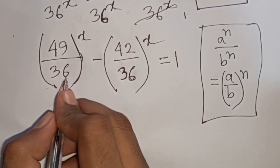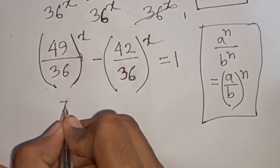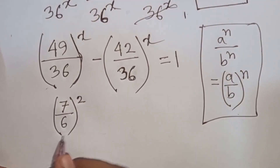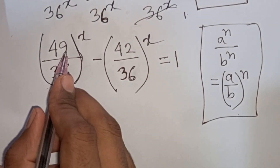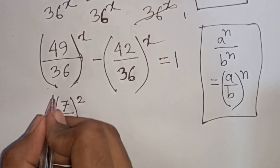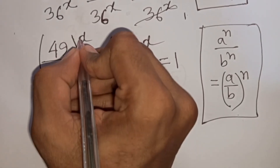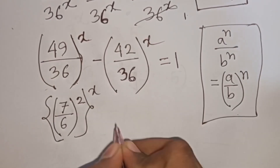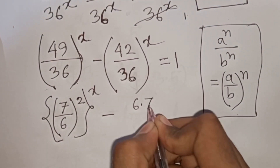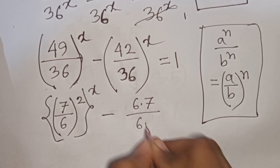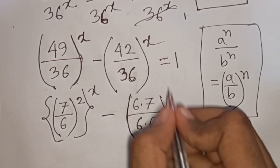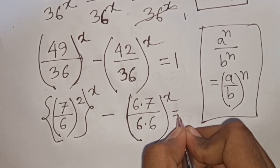Now, 49 over 36 can be written as (7/6) squared, since 7 squared equals 49 and 6 squared equals 36. And 42 over 36 can be written as (6 times 7) over (6 times 6). So the equation becomes (7/6)^2 to the power x minus (42/36) to the power x equals 1.